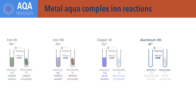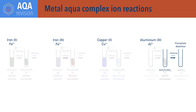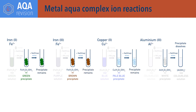If sodium hydroxide solution is then added in excess, the white aluminium(III) hydroxide precipitate previously formed redissolves and the complex ion [Al(OH)₄]⁻ is formed, producing a colourless solution. The other metal hydroxide precipitates remain unaffected by the addition of excess sodium hydroxide.